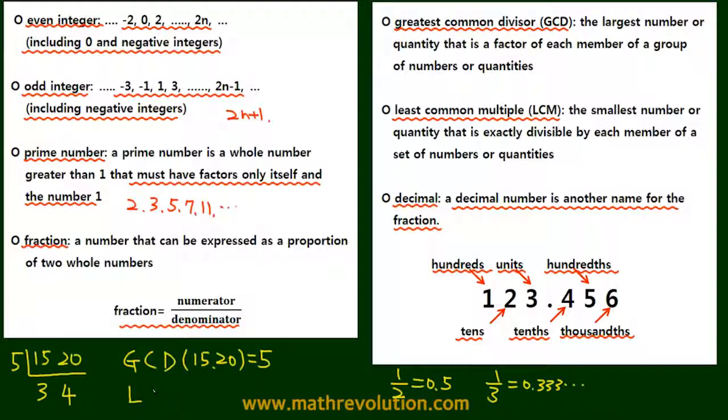And we can also get the least common multiple of 15 and 20. And by that calculation we get 5 times 3 times 4, so we get 60.